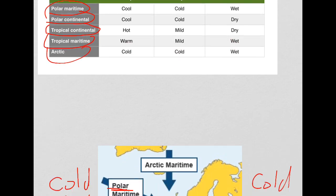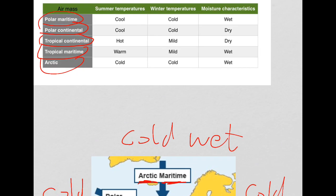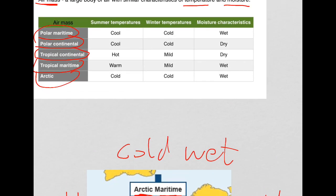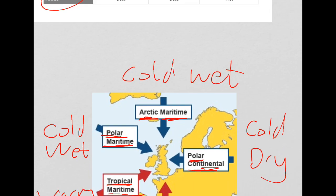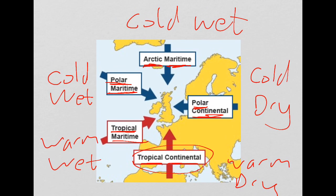The final air mass is the Arctic air mass, often just called Arctic but can be referred to as Arctic maritime. This means cold and wet. Looking at the characteristics: cold in summer, cold in winter, and wet throughout the year. So those are the five main air masses affecting the UK and their characteristics.